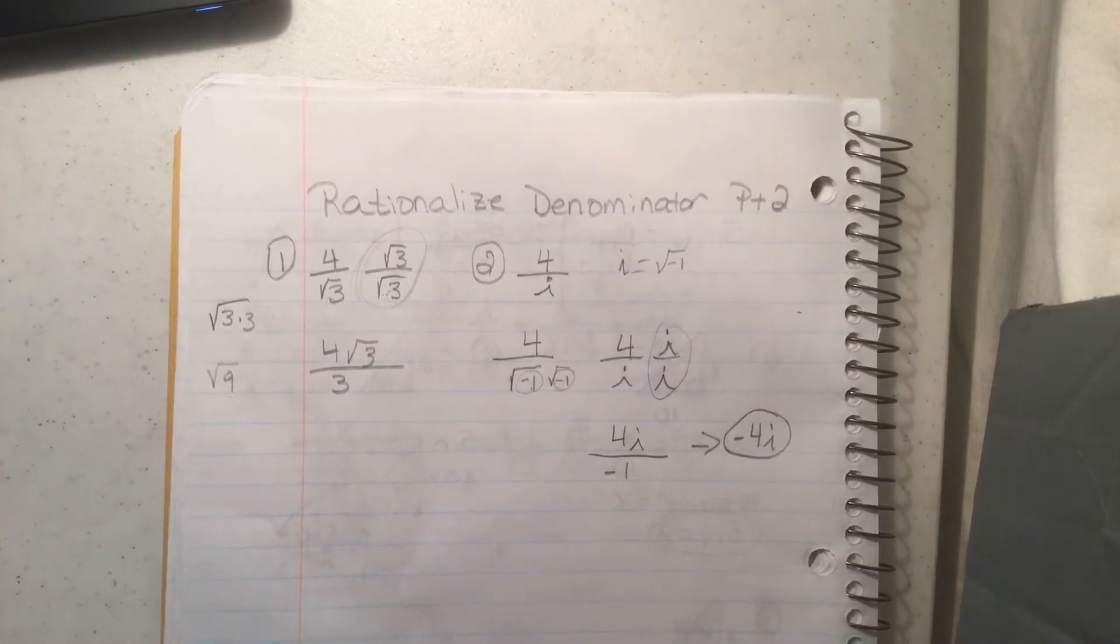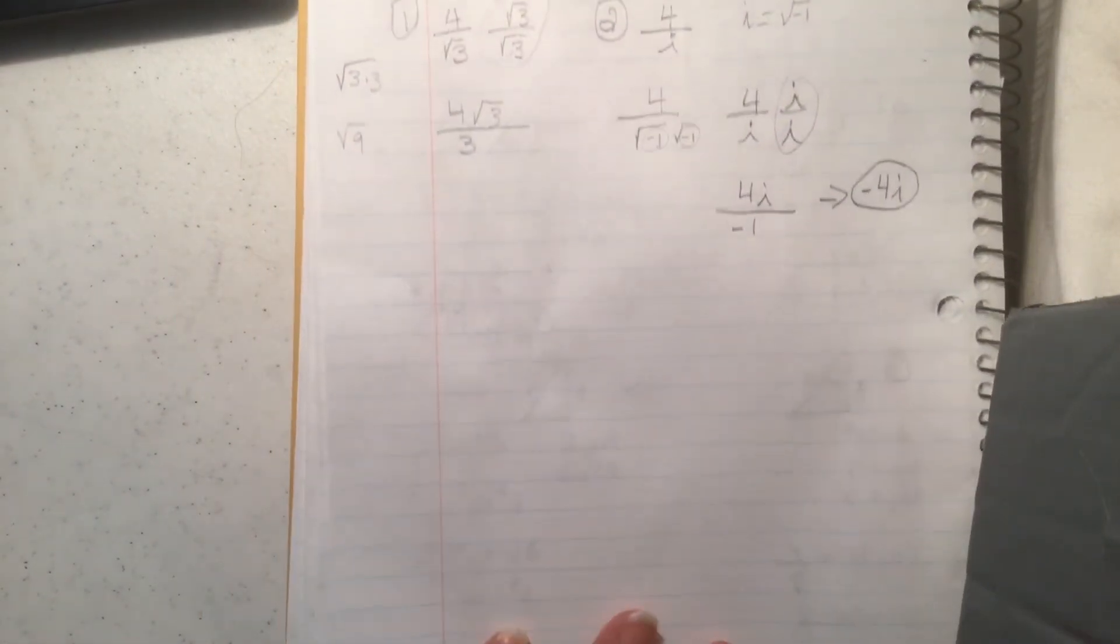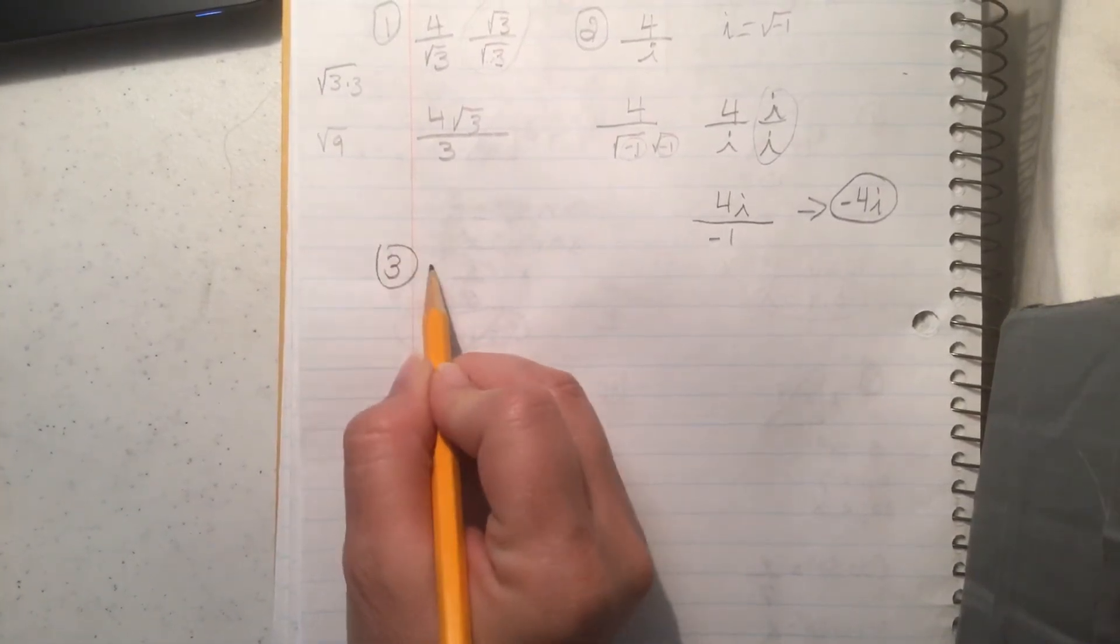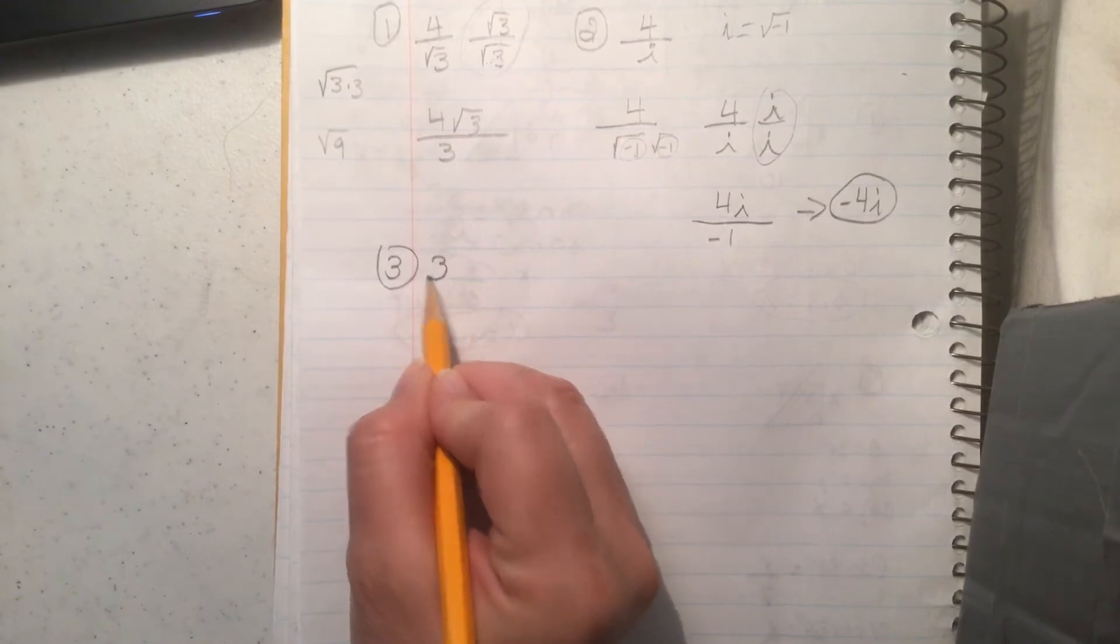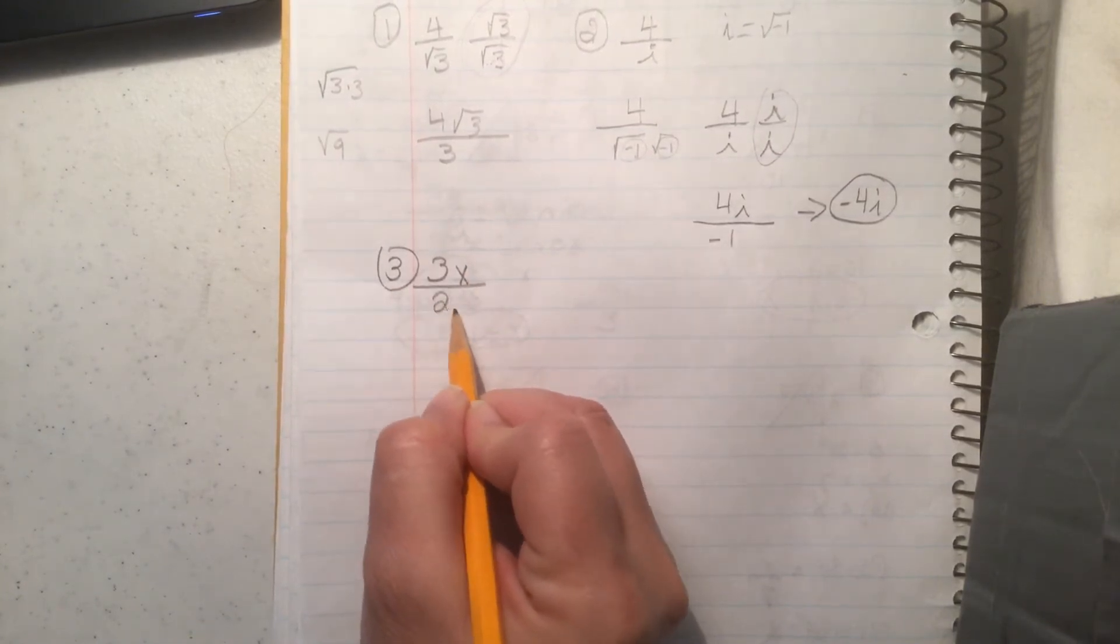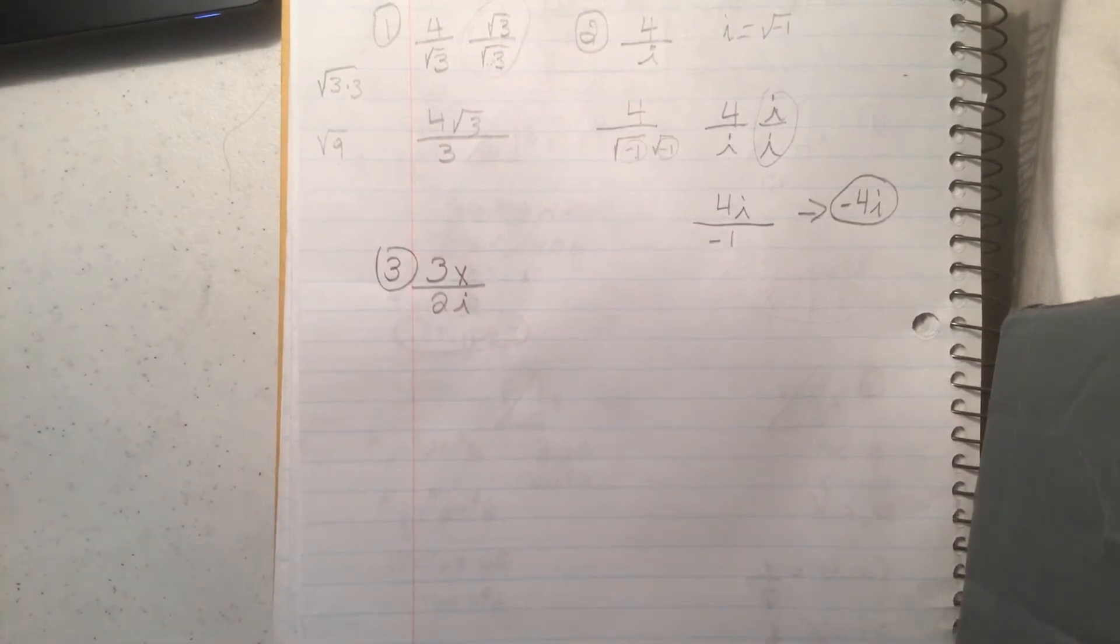Okay? I'm going to give you a couple. Let you see how you do on this one. I'm going to leave that right there. Alright, so try this. Try 3x over 2i. Try that.